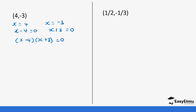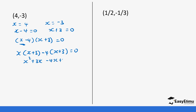So we expand this expression. We get x into bracket (x plus three), then minus four into bracket (x plus three), equals zero. So that gives us x squared plus 3x minus 4x — be careful — minus 12 equals zero.